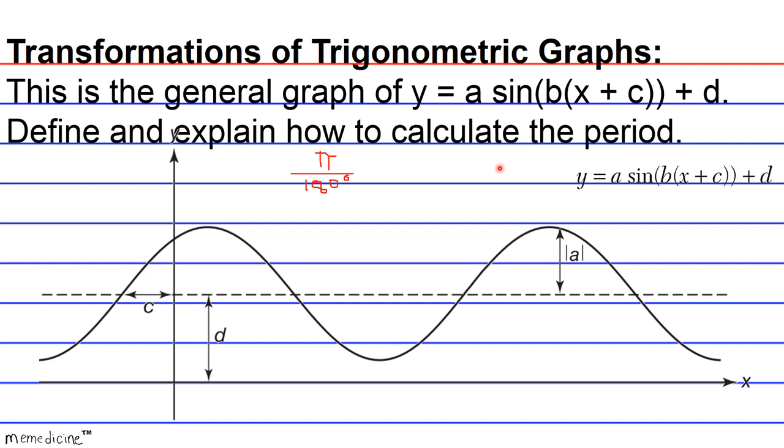Alright, so the period is going to basically be the length of one complete cycle of the graph. So here, our sine graph usually starts here, but it's shifted a little bit, so this is what one complete cycle looks like if you were to see the entire extended graph. And that's going to have the equation 2π over b, where b is the leading coefficient that multiplies x.